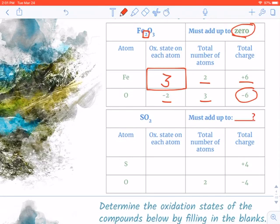For this next one, we've got sulfur dioxide. Again, there's no little exponent in the top corner, so they are going to add up to zero. I've given you the total charges again.